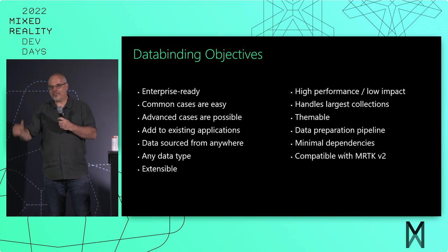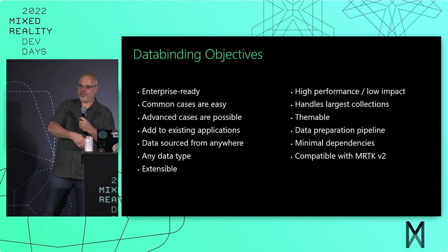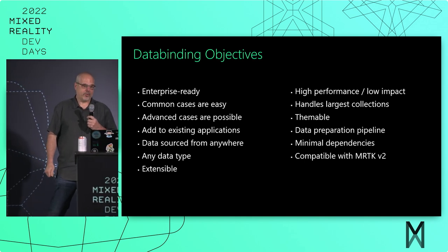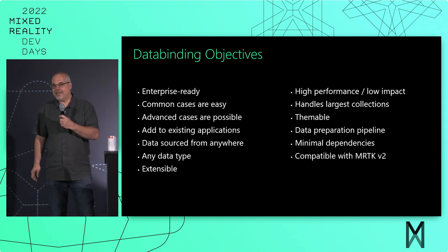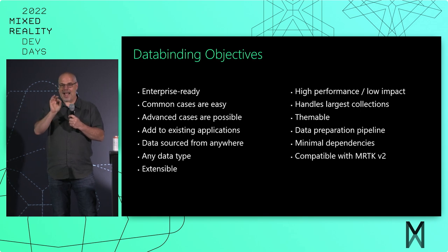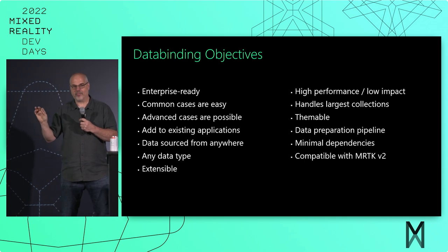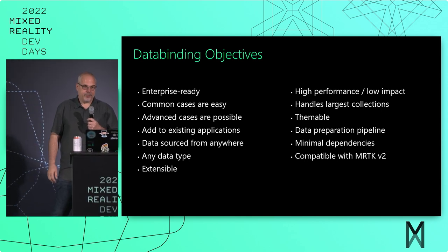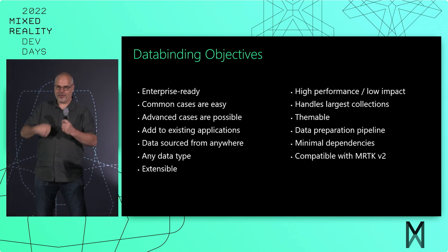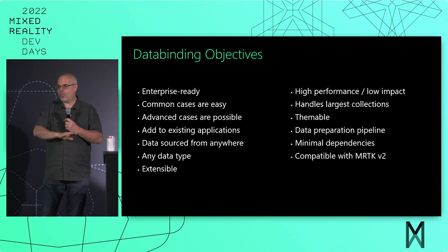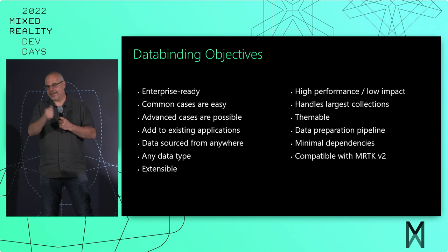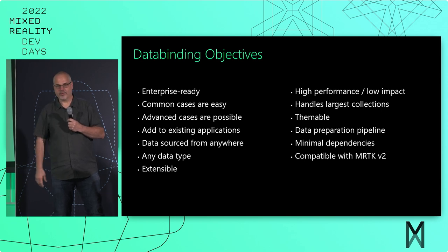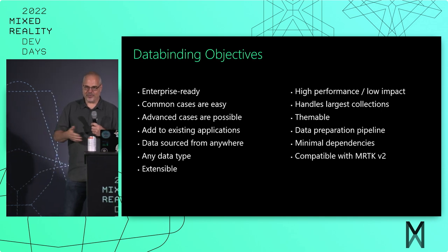Data sources come from everywhere — from custom backends, standard backends, RESTful services, from C-sharp state objects that give you the state of your application you may want to present to the UX. We wanted to make sure that was totally open-ended. One of our tenets is: make the common use cases super easy, but make absolutely certain you can handle even the most sophisticated use cases as well, because we can never predict what everybody might want to do with the technology. We also want to make sure that no matter what you already have in play, you can add data binding at any time, at any point in your product life cycle, and it'll just work.